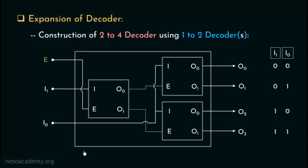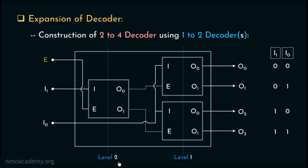Notice the procedure: we first covered all the output lines using these decoders — we call this level 1. The decoder which gets the E input directly is the last level, which in this case is level 2. Interestingly, which one of the level 1 decoders will be enabled is decided by the output lines of the decoder of the next level, that is the level 2 decoder.